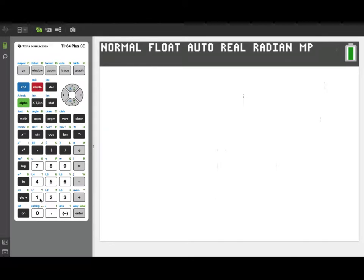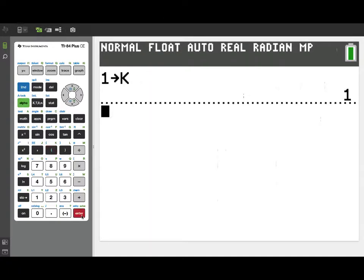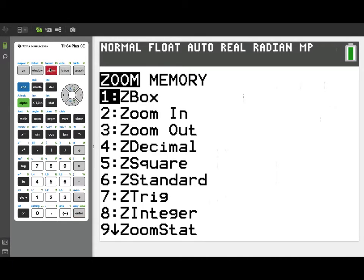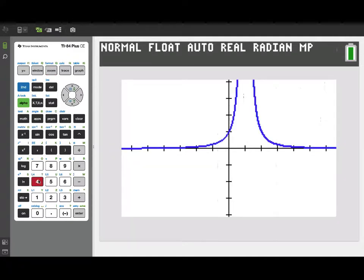I've entered that as my y1. And we're going to take a look at starting out with the value 1 being stored for k. That's going to give us a particular member of the family. Let me go ahead and set up a zoom decimal window. And here's a graph of that function when k is equal to 1.